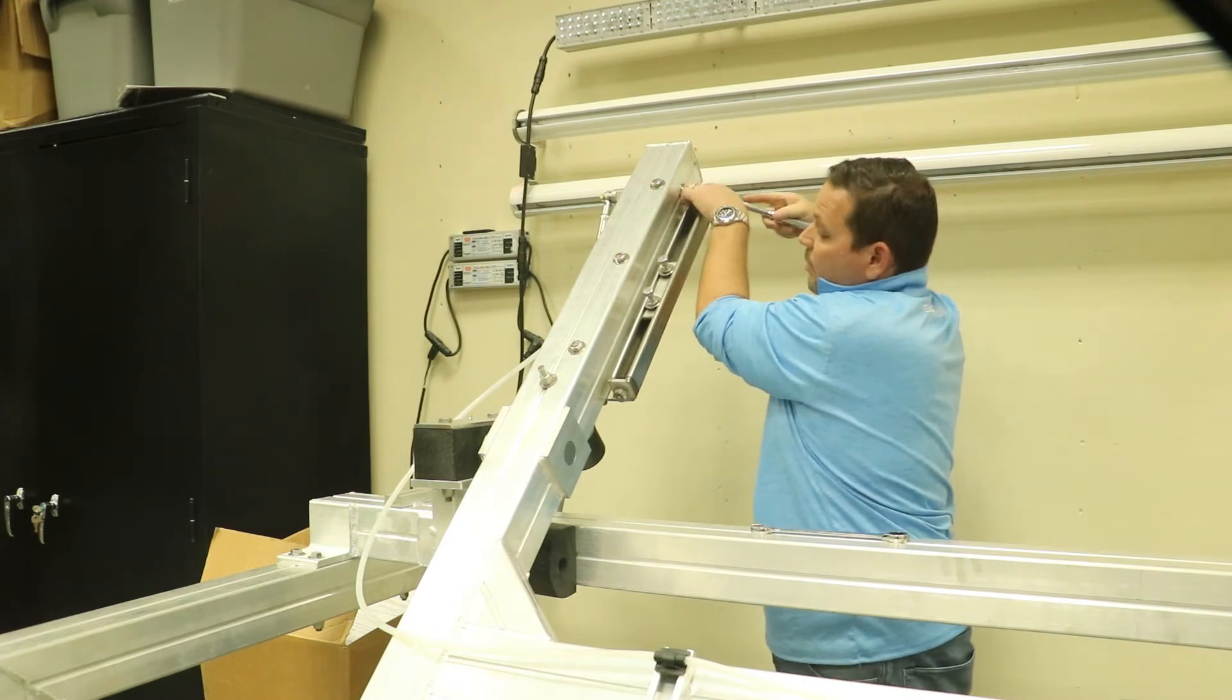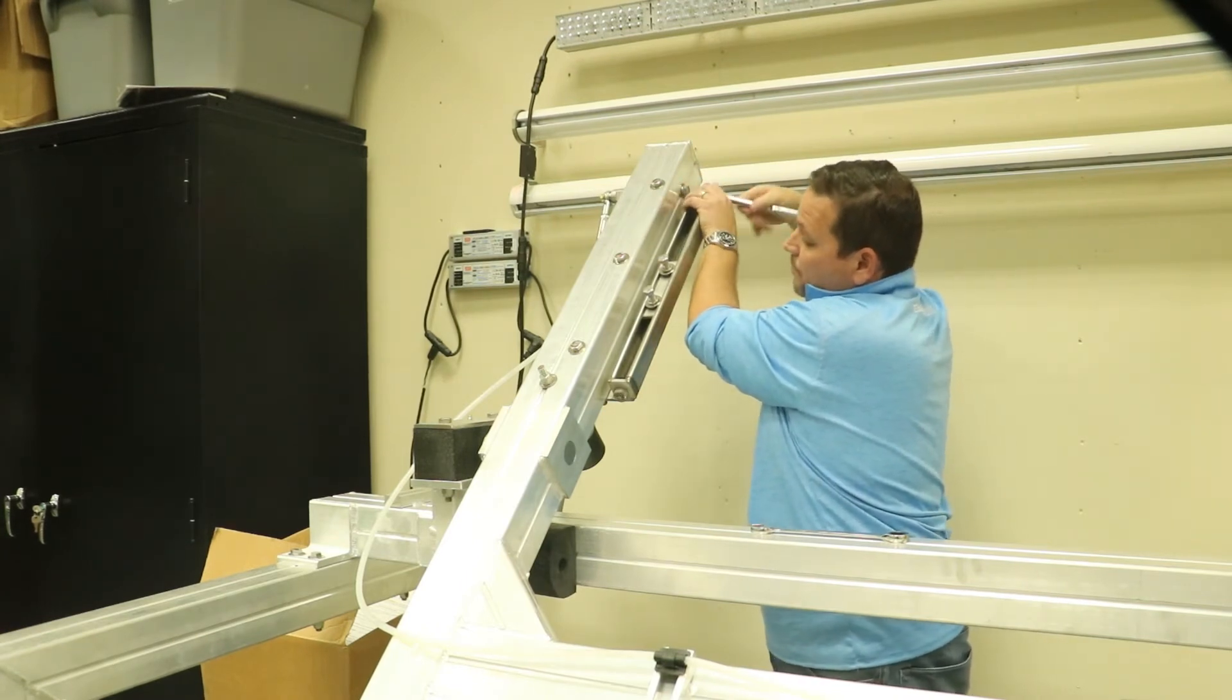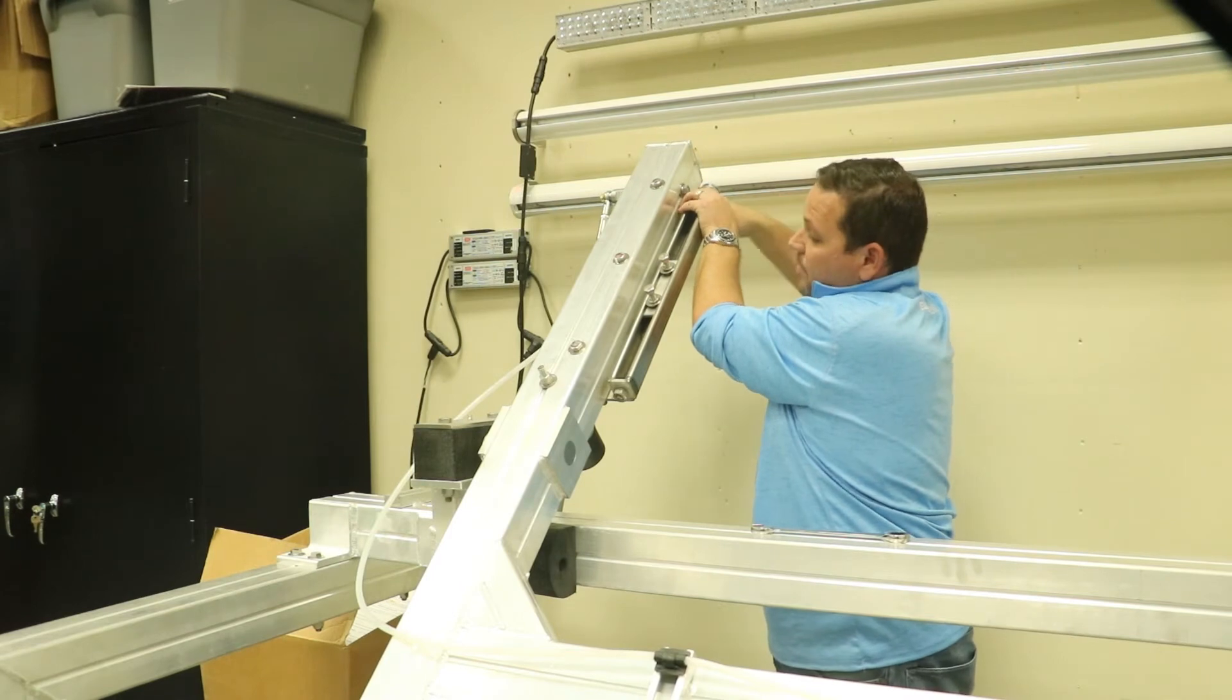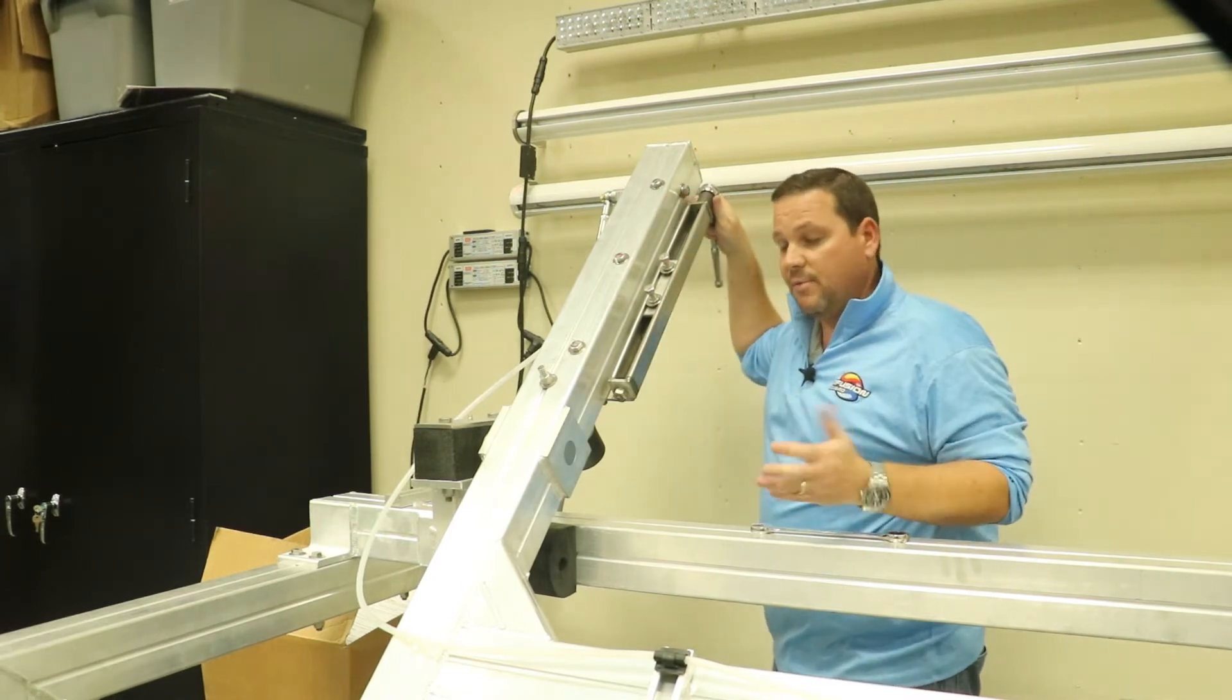If you want less penetration, you're going to run the counterweight away from the brush, making it lighter and smoother on the vehicle. Again, trying to achieve that three to four inches of penetration.